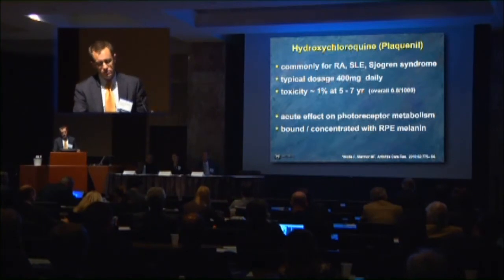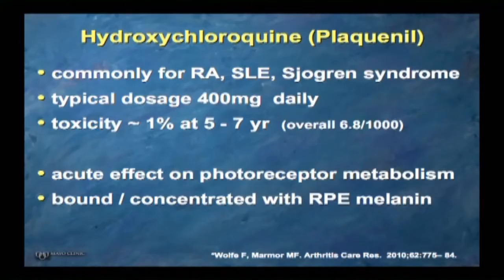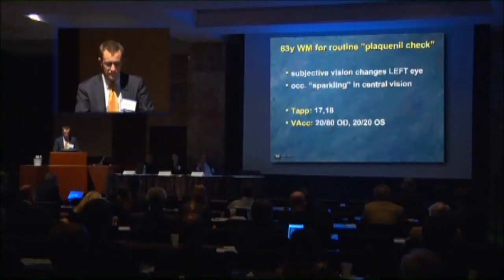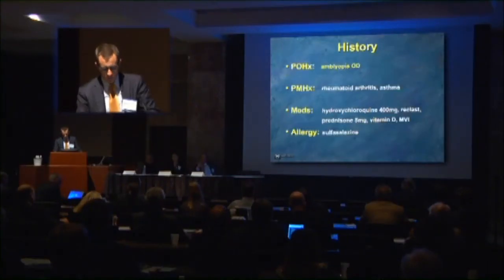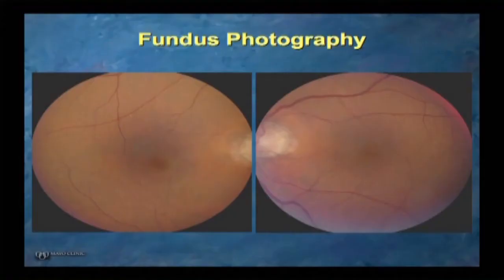In addition to toxicity, we also know that there's an acute effect on photoreceptor metabolism, and there is some concentration of the medication within the RPE melanin. It's not entirely clear whether that promotes toxicity, is protective from toxicity, or neither. This is a patient with amblyopia in the right eye on Plaquenil — an example of the timeframe in which we would typically catch this toxicity in the past. This patient did have significant changes on their 10-2.